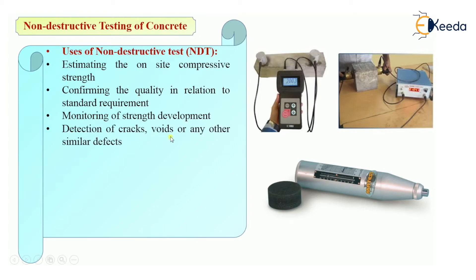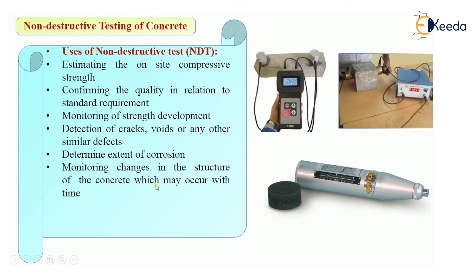Fourth, detection of cracks, voids, or any other similar defects — by NDT we can detect whether there are cracks or voids in the structure. Fifth, determine the extent of corrosion — in RCC reinforced concrete structures, there are chances of corrosion of the reinforcement, and we can determine the extent of that corrosion. Sixth, monitoring changes in the concrete structure which may occur with time, such as carbonation, micro cracks, voids, or other defects, and how strength and durability factors are developing.